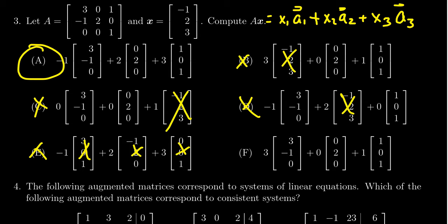I want to mention that with choice F, although the column vectors are right, the linear combinations are not. I mean, notice the coefficients 3, 0, and 1. That is not the vector X. So F is an incorrect choice. A is the correct choice on this one.